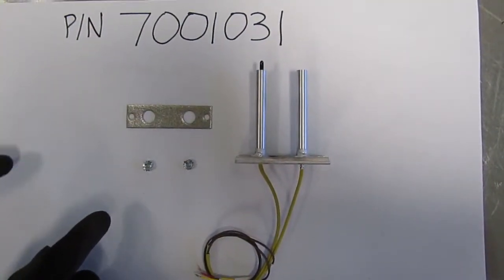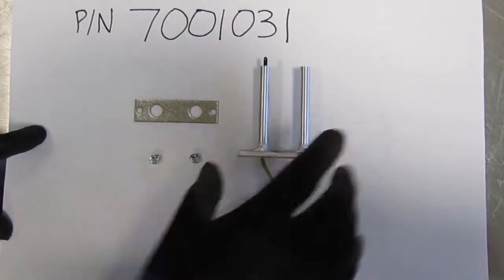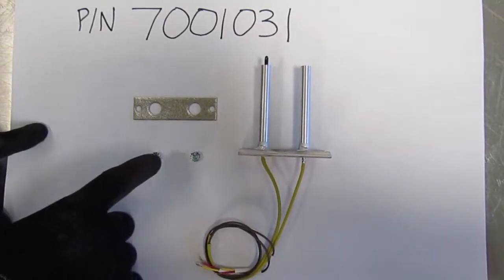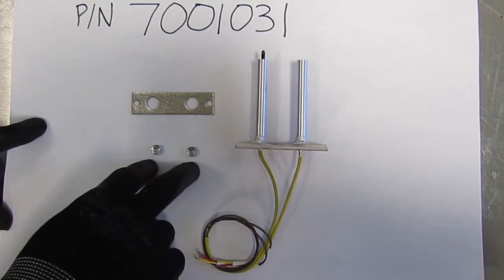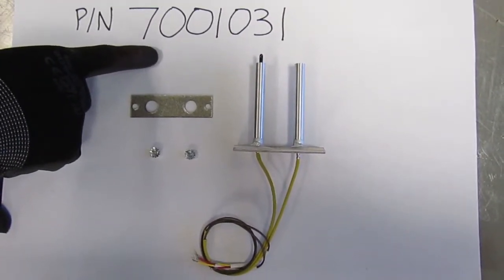The control housing probe kit consists of a dual probe assembly, a gasket, and two nuts, part number 7001031.